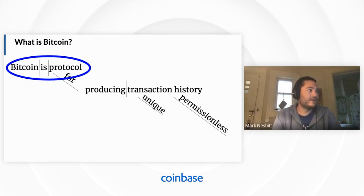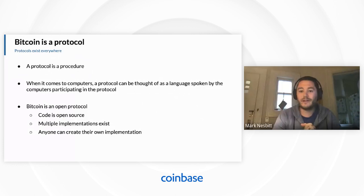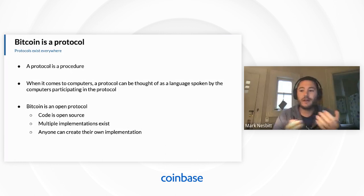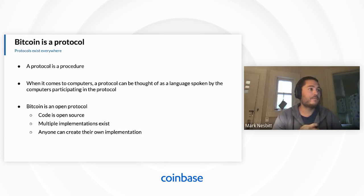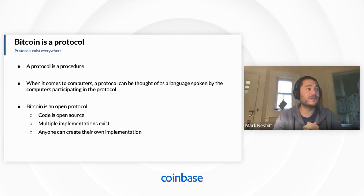We're going to start with "Bitcoin is a protocol." What is a protocol? A protocol is a procedure. Protocols exist everywhere — anywhere there's a procedure that you've been a part of, in a lot of senses, you're working within a protocol. The example I like to give is driving. I live in California. Driving in the state of California is a protocol defined by the laws of California. You can drive through green lights, you have to stop at red lights, and if you're turning left on a green light, you have to yield to oncoming traffic. These are rules of a protocol that define how an interaction model should take place.